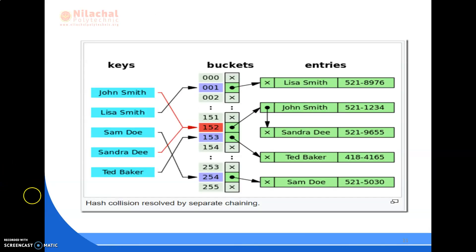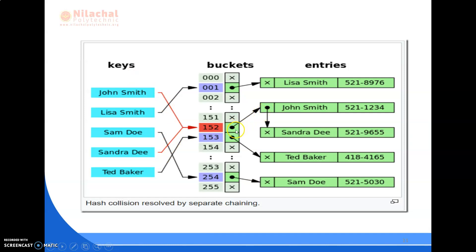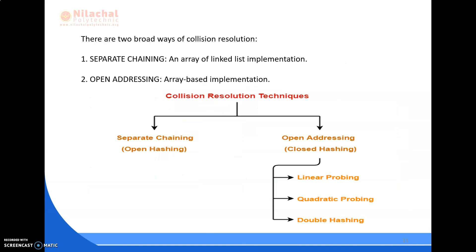Here we have the keys — the names — and their memory allocations. The memory location allocated by the hash function for John Smith is also equal to the memory location allocated to Sandra D, that is 125. The hash value for both keys is 152, so we cannot store the data of two keys in the same memory location. We have some methods to solve these collisions — there are two broad ways of collision resolution.